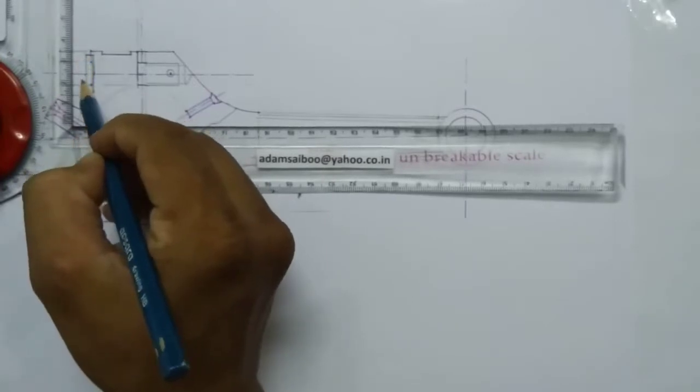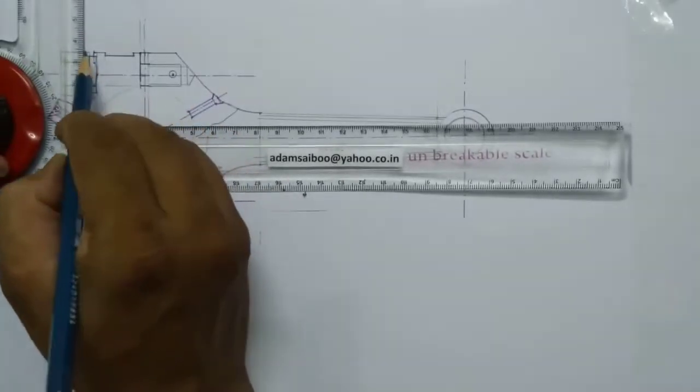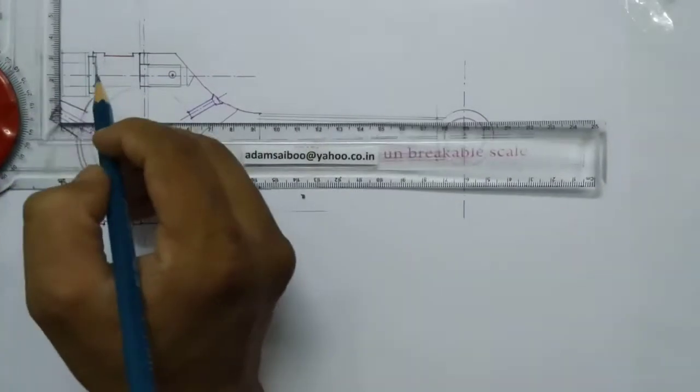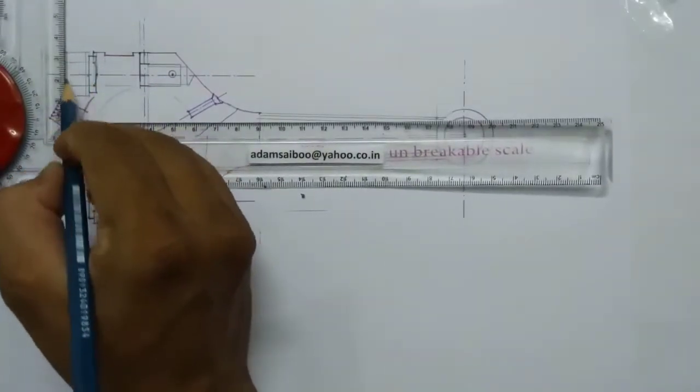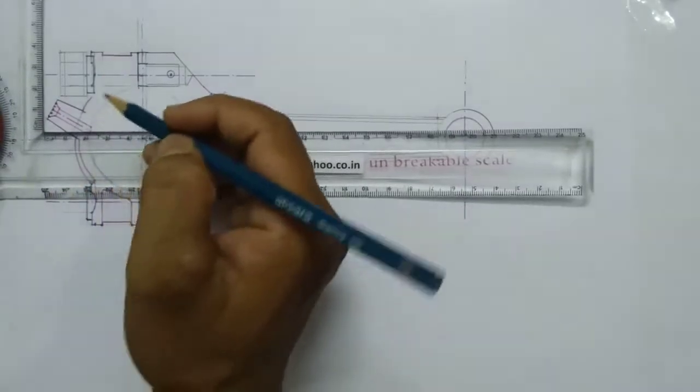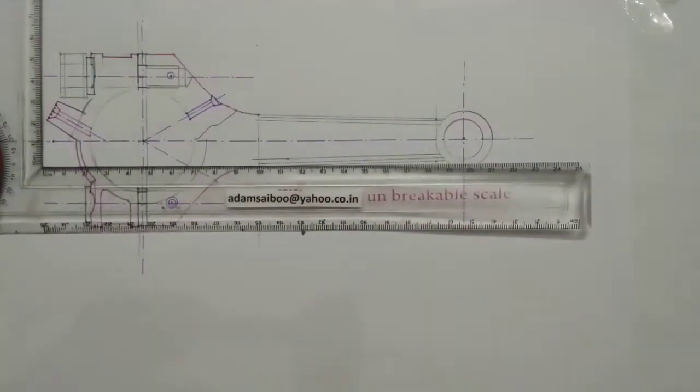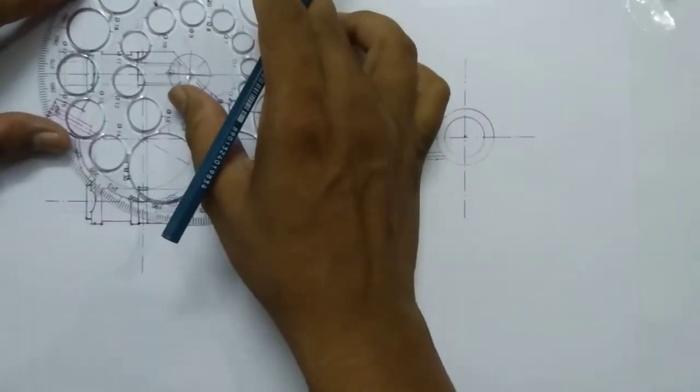For chamfer we'll get 3mm here, so I'll roughly draw a line approximately greater than 1mm. Close circle to draw.